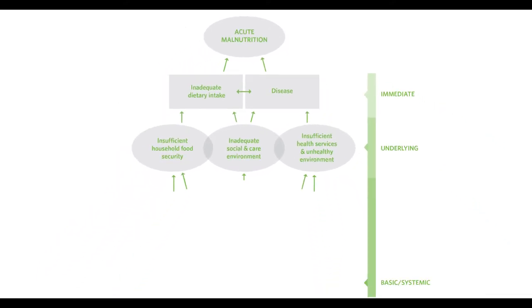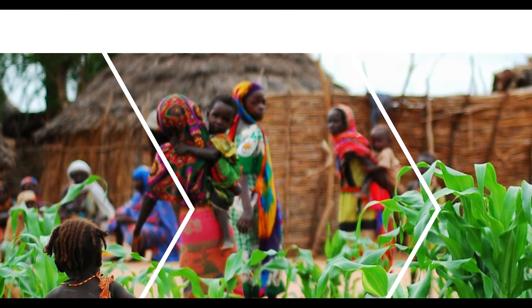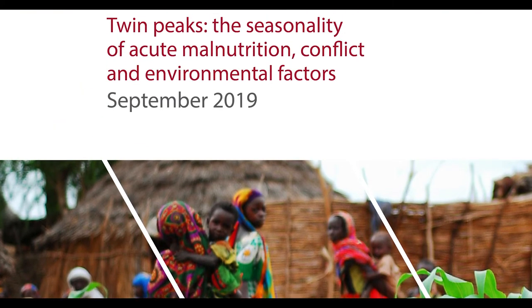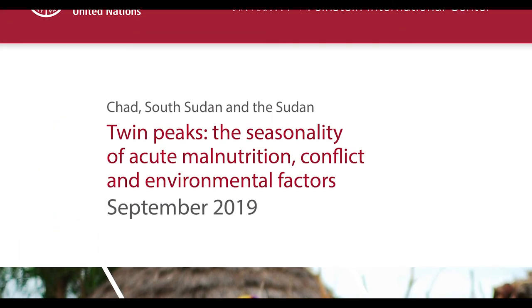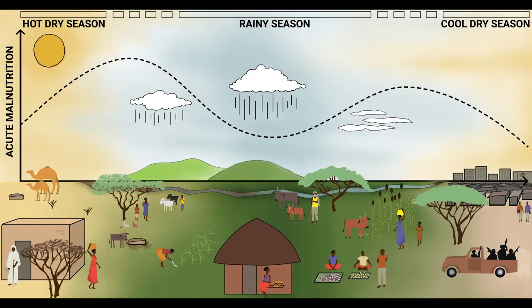However, we still don't have a common understanding of the basic drivers of malnutrition. Our own research, combined with a recent study conducted in collaboration with FAO, has revealed important new insights and evidence on the relationship between acute malnutrition, conflict, and environmental factors. This work has also demonstrated the extreme seasonality of wasting in Chad, Sudan and South Sudan.